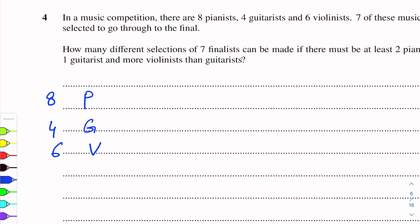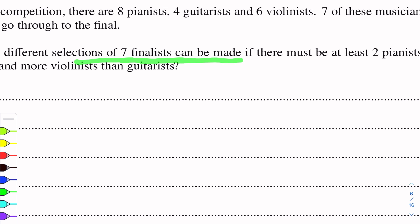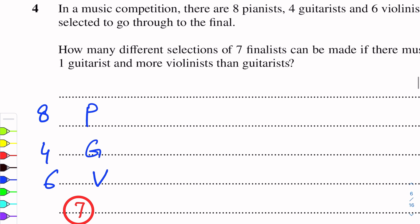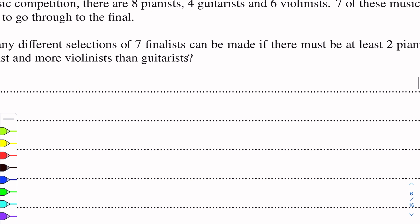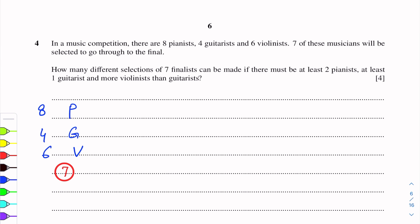We have to select 7. The restrictions in the question are: there must be at least 2 pianists, at least 1 guitarist, and more violinists than guitarists. So now we have to follow these restrictions, and following these restrictions we have different options.